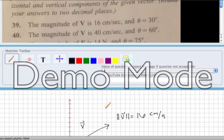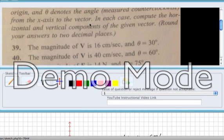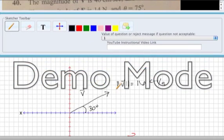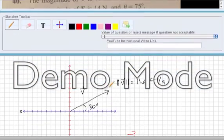Thanks for sending another question. If I'm reading this question correctly, they have given us a vector defined by its angle up from the x-axis and its magnitude of 16 centimeters per second, and they would like us to decompose this vector into perpendicular components.